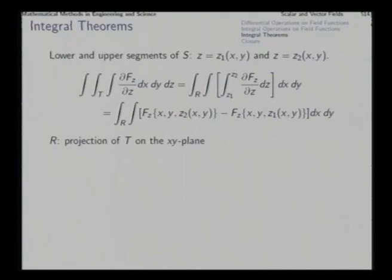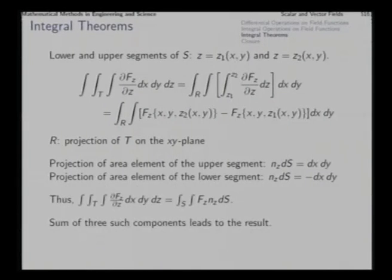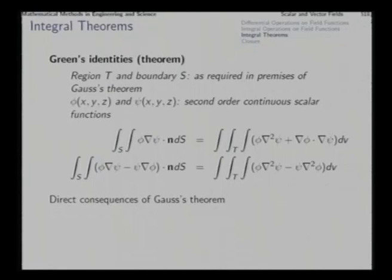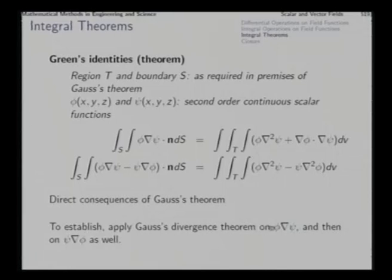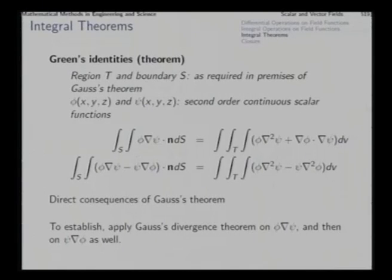There are two further important identities called Green's identities, which work with a volumetric region T and its closed surface boundary S as in Gauss's theorem. Applying Gauss's theorem on phi grad psi and then on psi grad phi, we can establish these relations as direct consequences, which have many important applications in various fields.